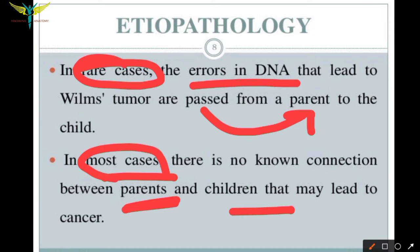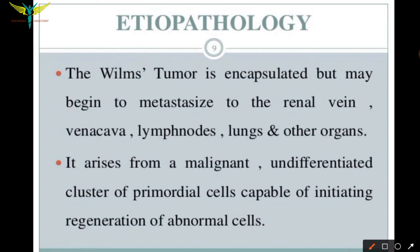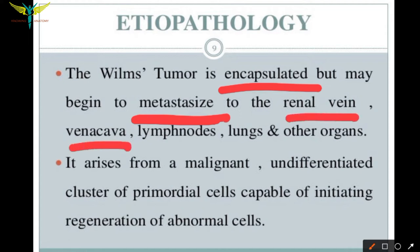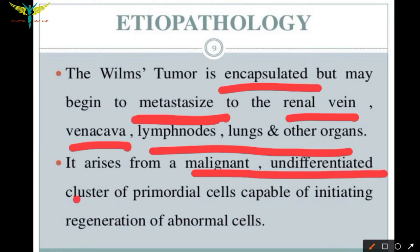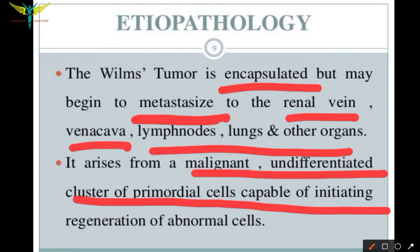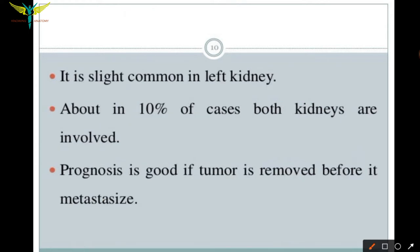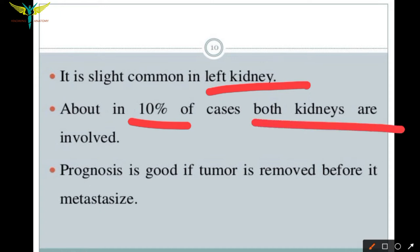Most cases of this tumor are unknown in origin. The tumor is encapsulated but may also show metastasis, spreading to the renal vein, vena cava, lymph nodes, lungs, and other organs. It arises from a malignant undifferentiated cluster of primordial cells capable of initiating regeneration of abnormal cells. Wilms' tumor is slightly more common in the left kidney; only about 10 percent of cases involve both kidneys.